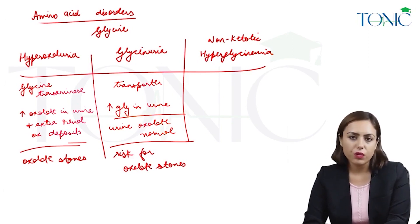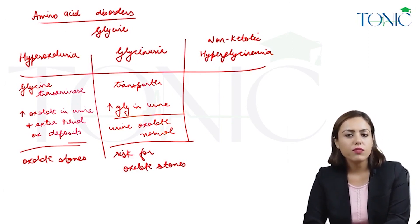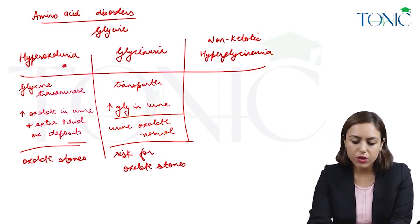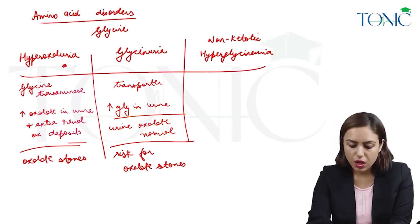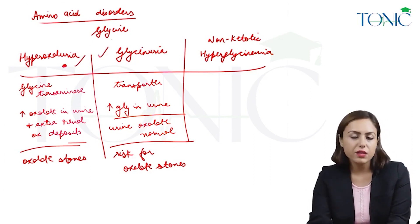But urine oxalate is normal. Urine oxalate will be increased in hyperoxaluria. So, be careful in distinguishing between these two questions, hyperoxaluria and glycinuria.